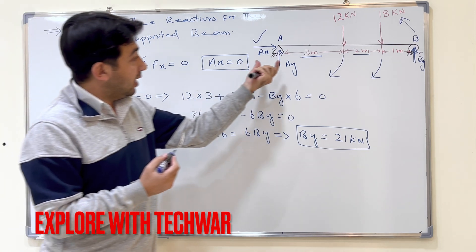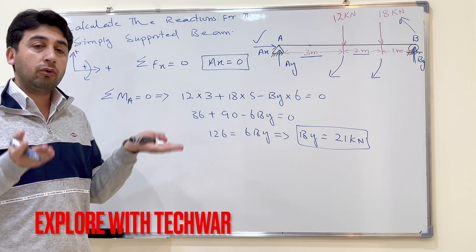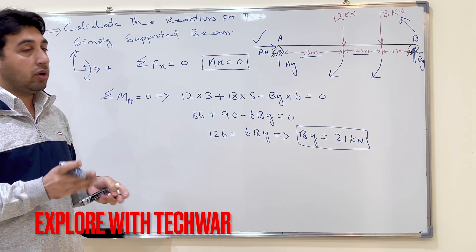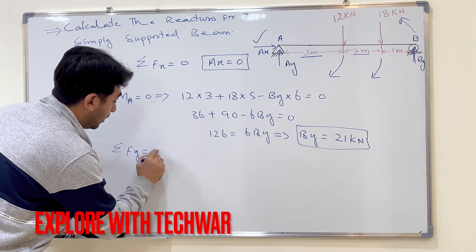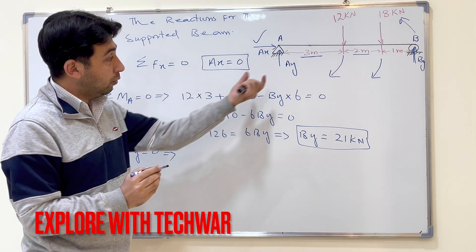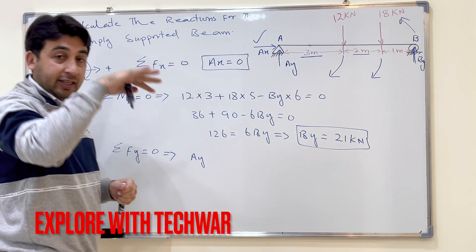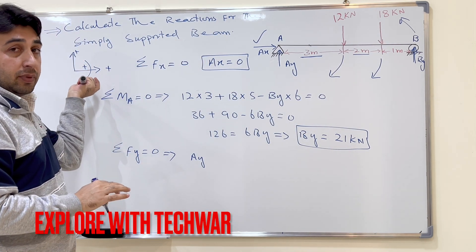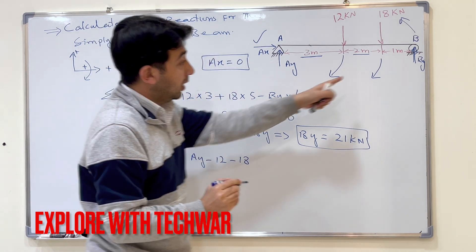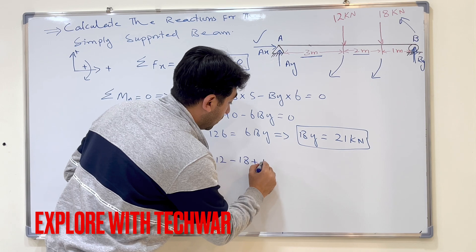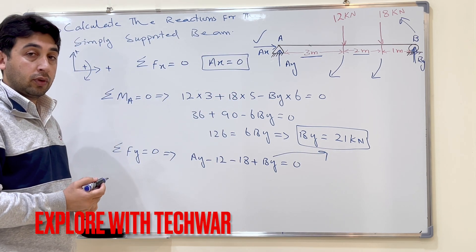Now the only unknown left is AY. I use the sum of forces in the Y direction equal to zero. AY acts upward (positive), 12 kN and 18 kN act downward (negative), and BY acts upward (positive). So the equation is: AY minus 12 minus 18 plus BY equals zero.